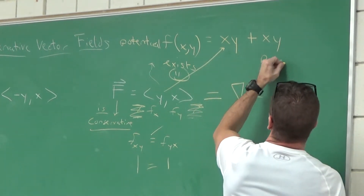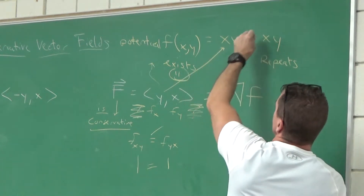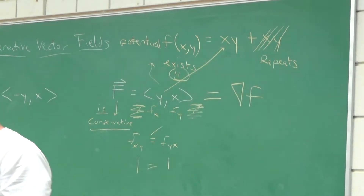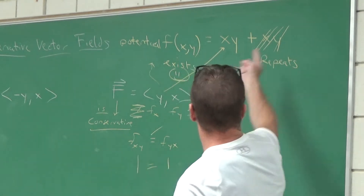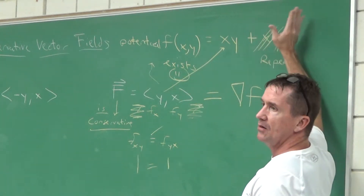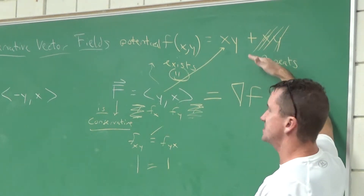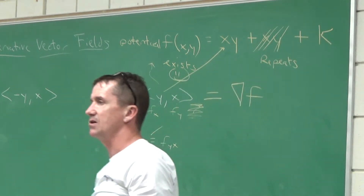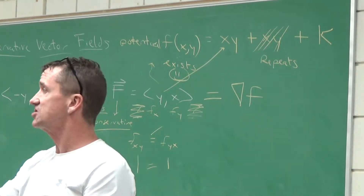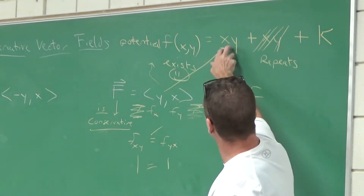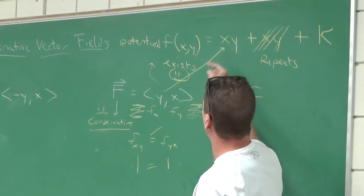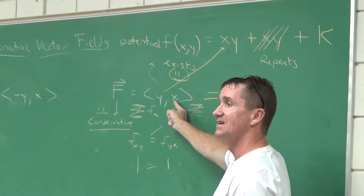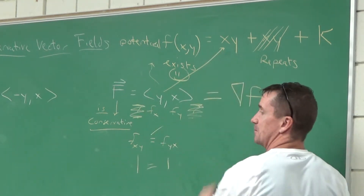Since I did integrals, I should put plus constant K. Now let's check our work. The function f of x and y is XY. Is the partial of XY with respect to x the x-component? Yes. Is the partial of XY with respect to y the y-component? Yes. So this vector field equals the gradient of the potential function XY.